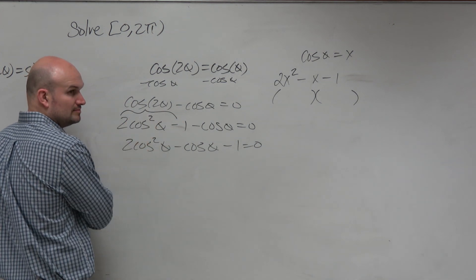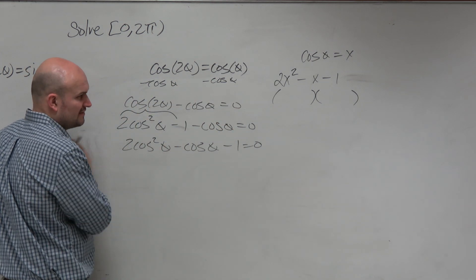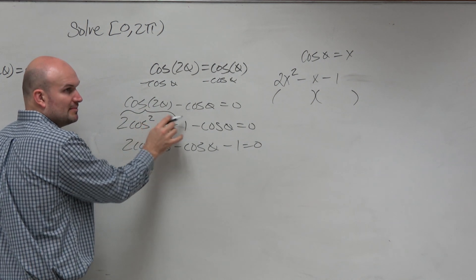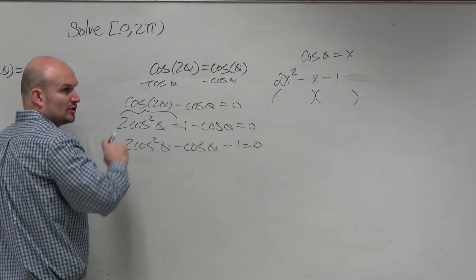This is written on the board. It's in u's instead of thetas. But cosine of 2 theta is equal to 2 cosine squared of theta minus 1. It's the middle equation.